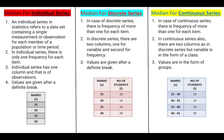In case of continuous series, it will also be like discrete series — made up of two columns. The first column, instead of having the variable, will consist of the class, as the values are in the form of groups. The second column will be about its frequency. If you want to know more, you can pause this video and read the table I have made — it will be very clear to you.